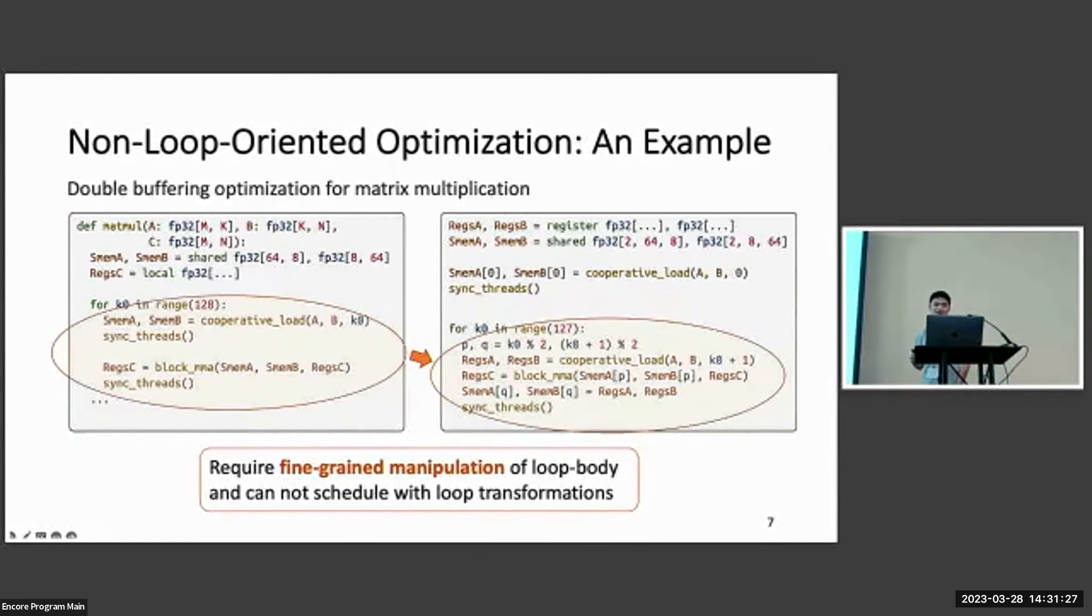I will give an example of the non-loop-oriented optimization here, but do not look at the details of the code. We can discuss it in the poster session. For now, you just need to know that there are some optimizations that need fine-grained manipulation of the loop body, but we cannot use loop transformations to do that.